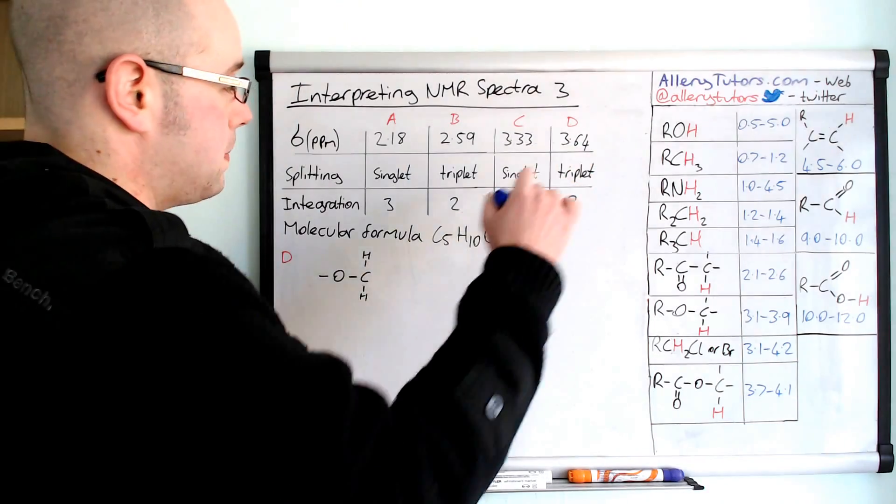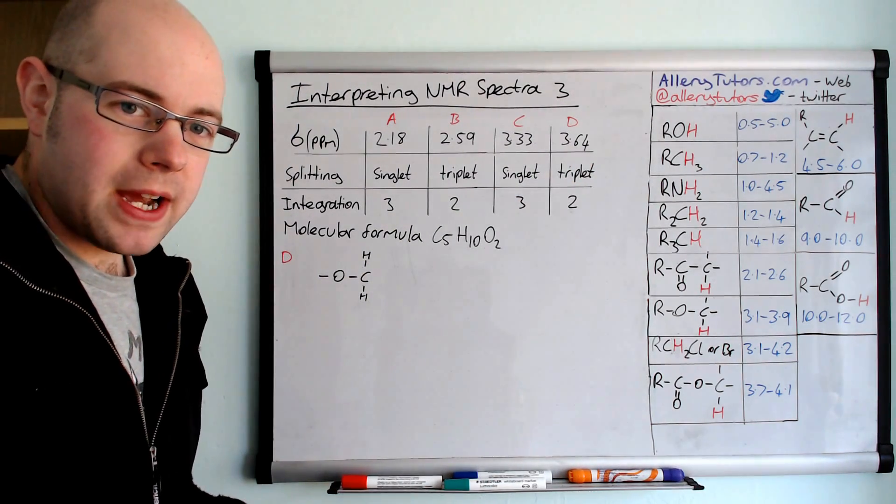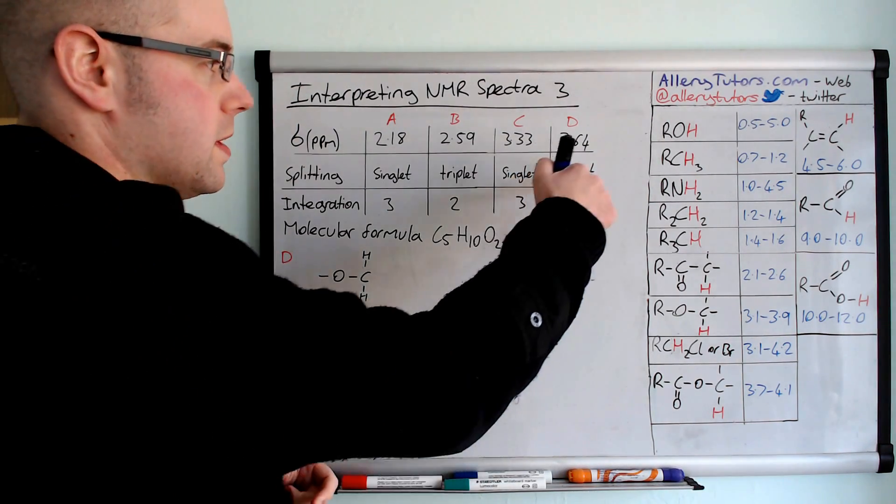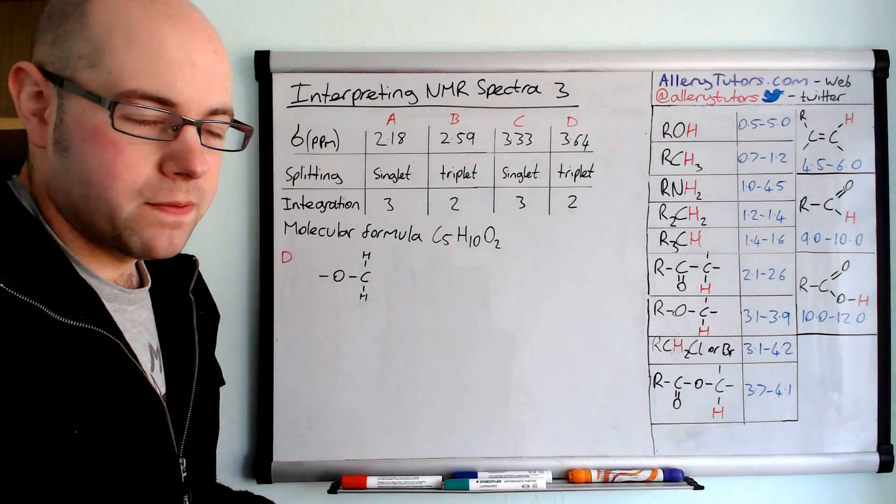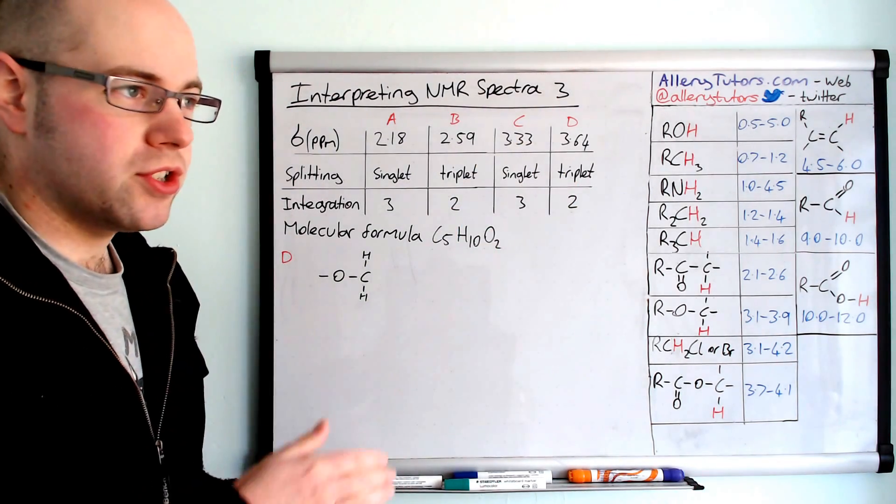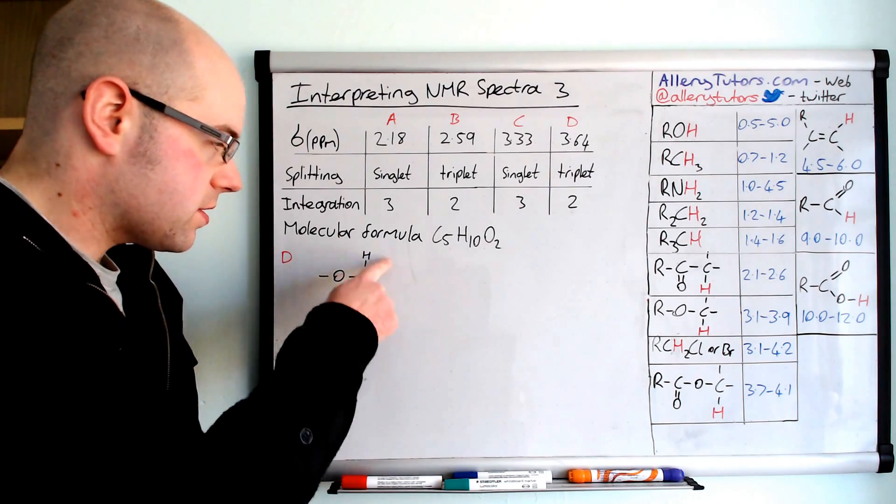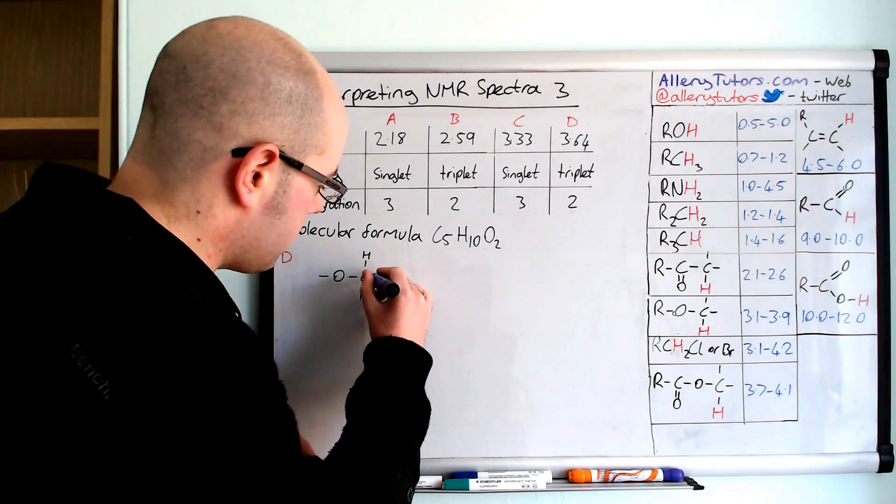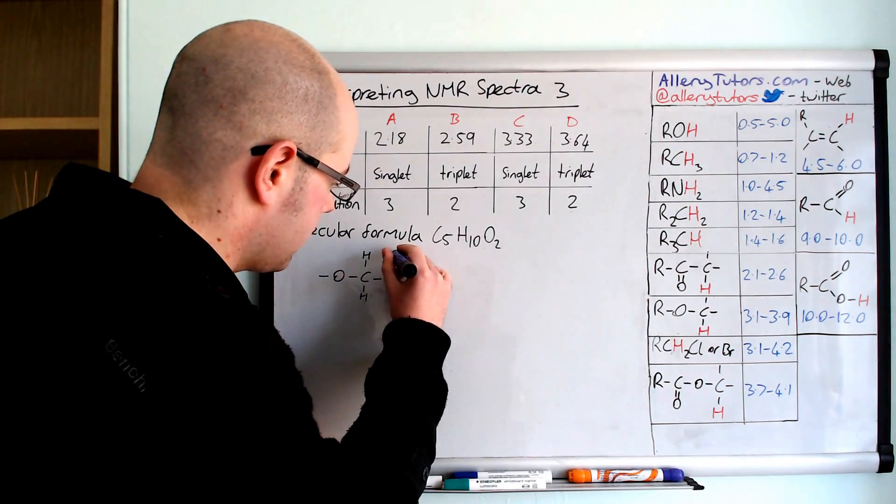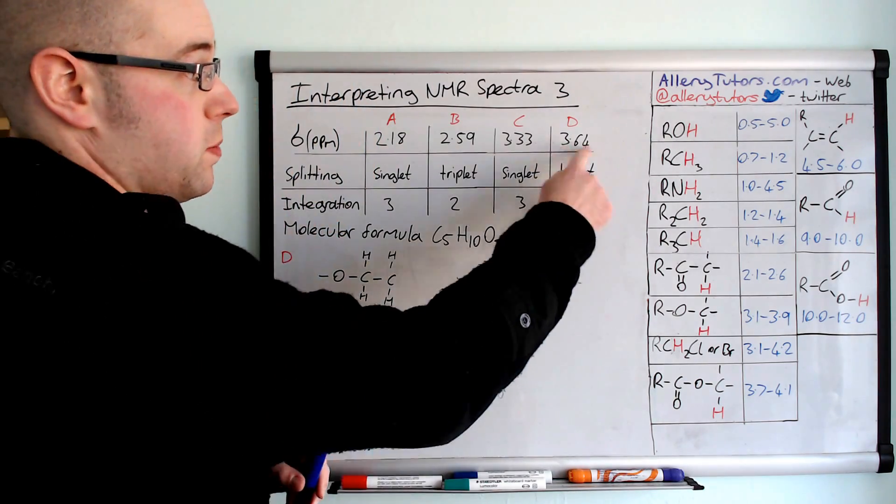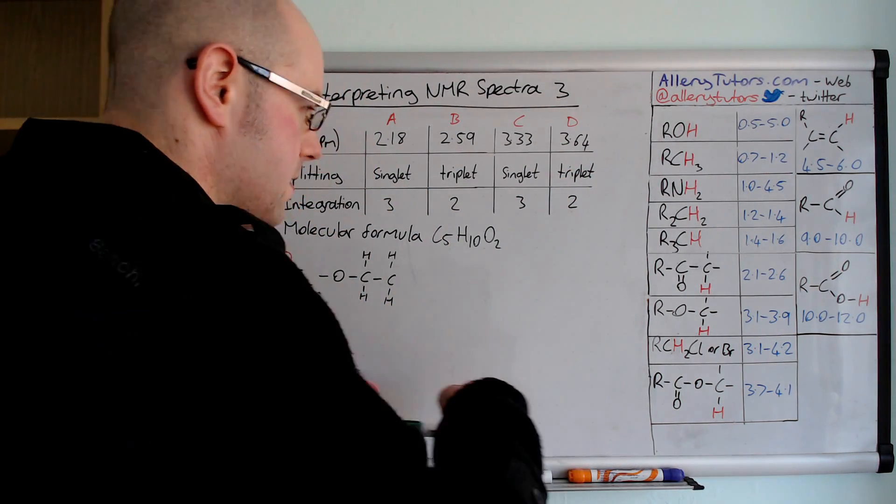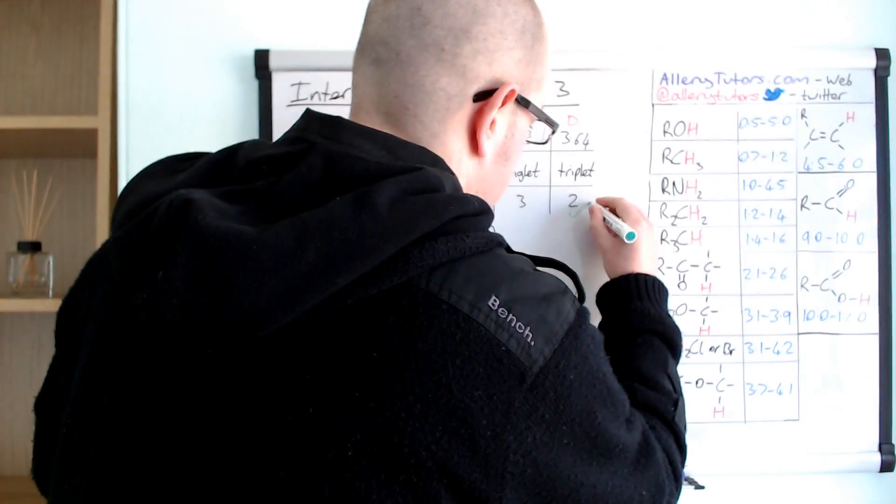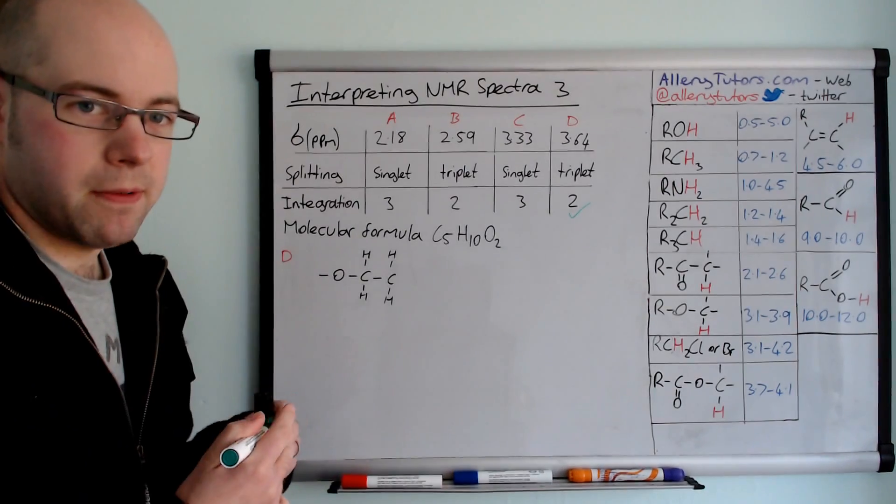But the splitting pattern tells us we've actually got another carbon next to it, and because it's a triplet it means that according to the n plus one rule we have two hydrogens next door to this carbon that we're looking at. So I'm going to put the other carbon on there now, and effectively that's what this splitting pattern tells us. So we've done D. I'm just going to tick that off just to say we've addressed that one.